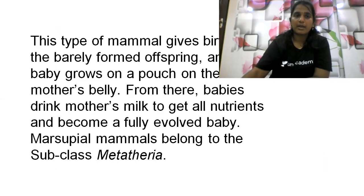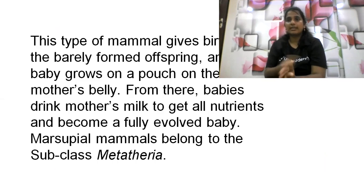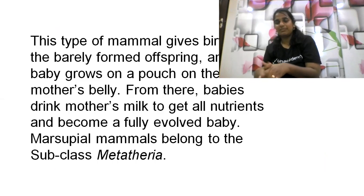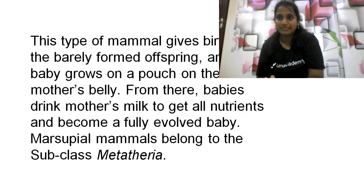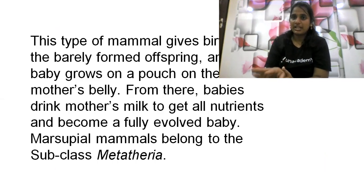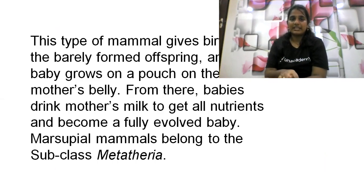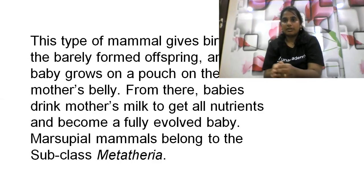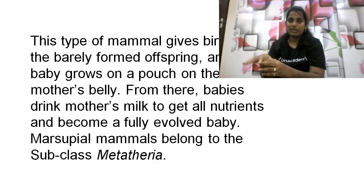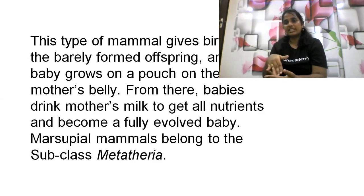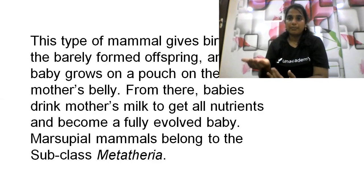Now we have another type of mammal: metatheria. Next, after prototheria, is metatheria. Metatheria means pouched mammals. These are found in Australia. So we have prototheria and metatheria. Metatherian mammals give birth, but it is premature birth. Usually a full term is 38 to 40 weeks, but these mammals give birth much earlier — around 30 weeks — so the baby needs the equivalent of an incubator.